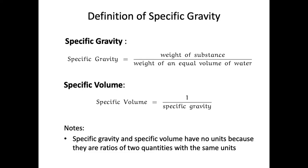Specific volume, on the other hand, is simply the inverse of specific gravity — specific volume equals one over the specific gravity. The number doesn't change; you just take the specific gravity and do one over that. To be honest, I've never seen specific volume used in pharmacy practice myself, and certainly in this course we won't belabor that point.